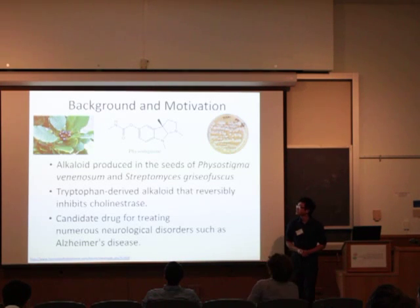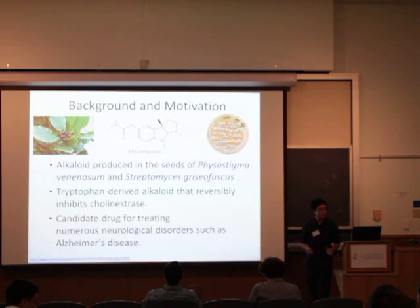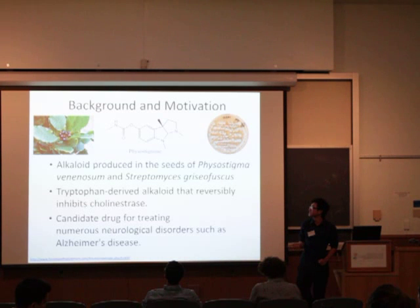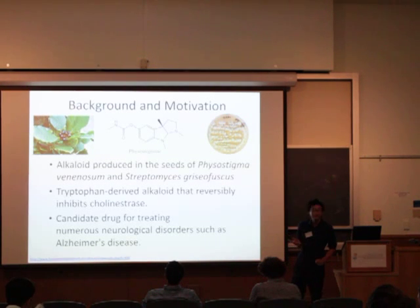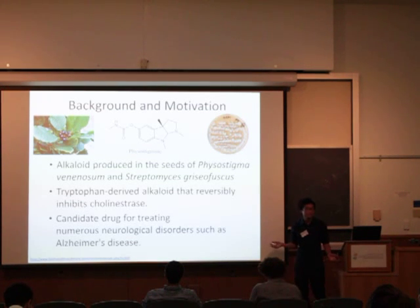Physostigmine is an alkaloid produced in the plant Physostigma venenosum. It is extracted from calabar beans, which you can see here.